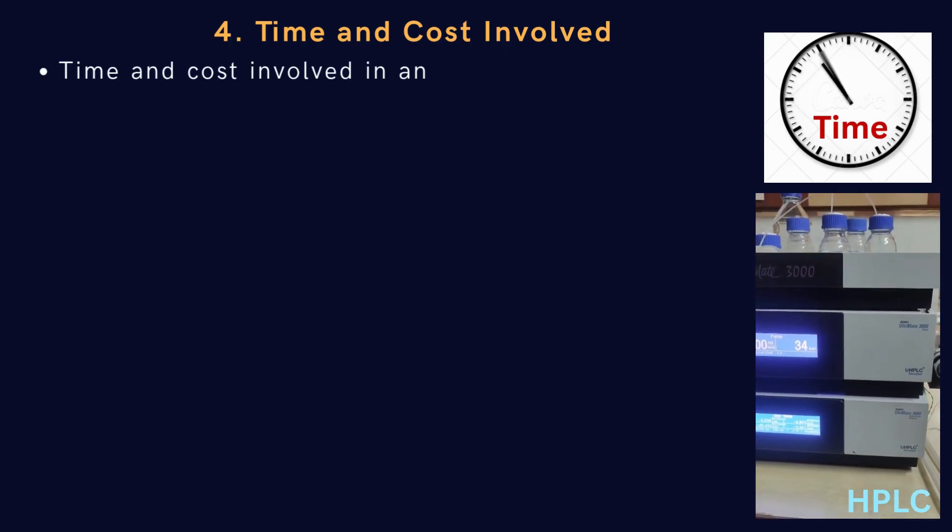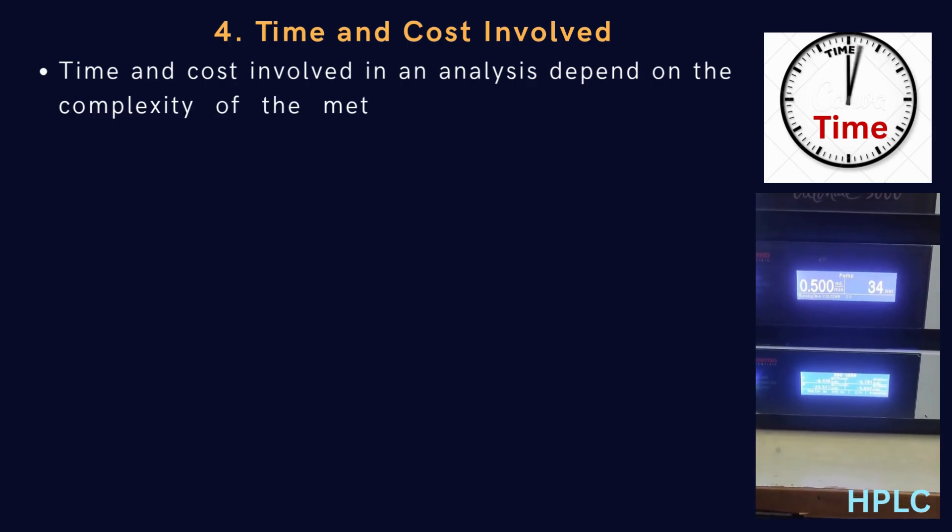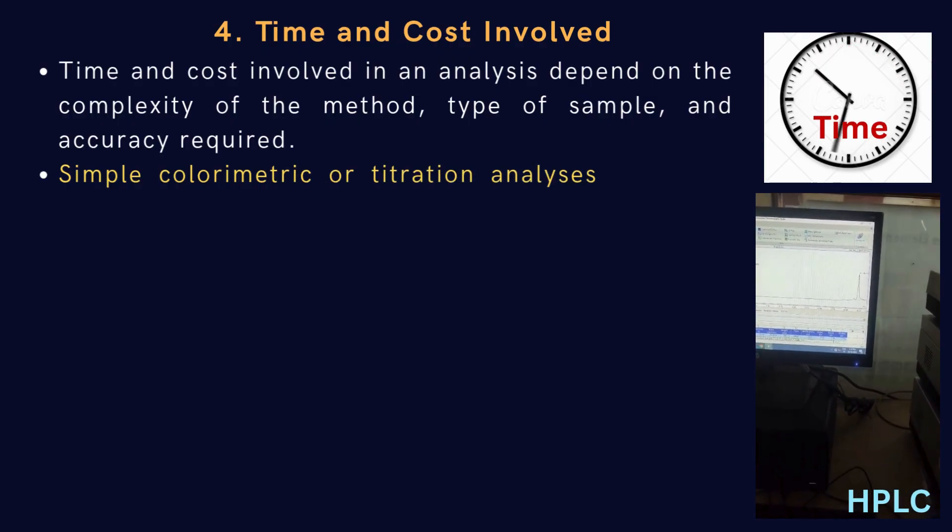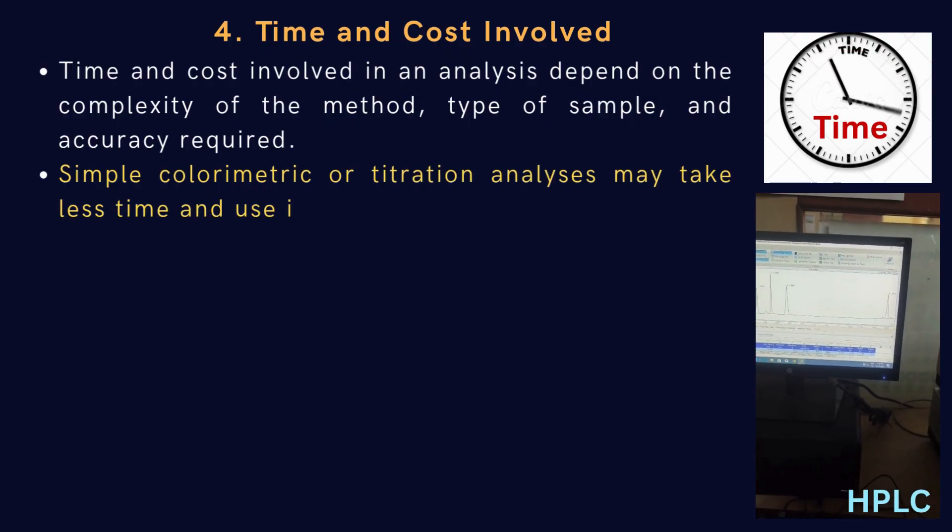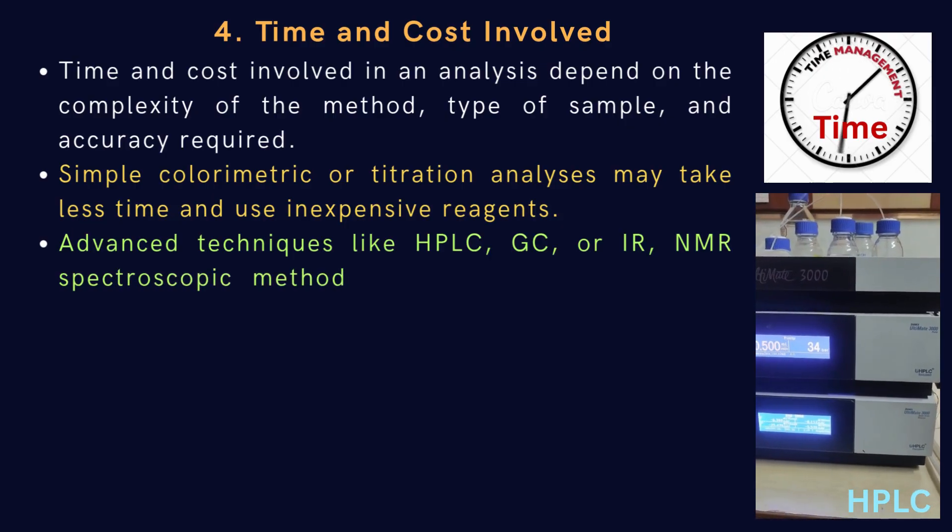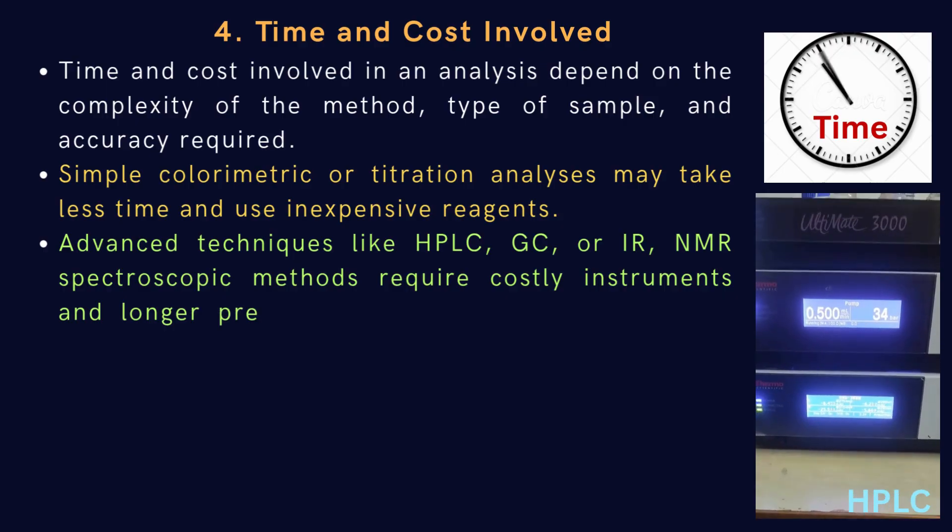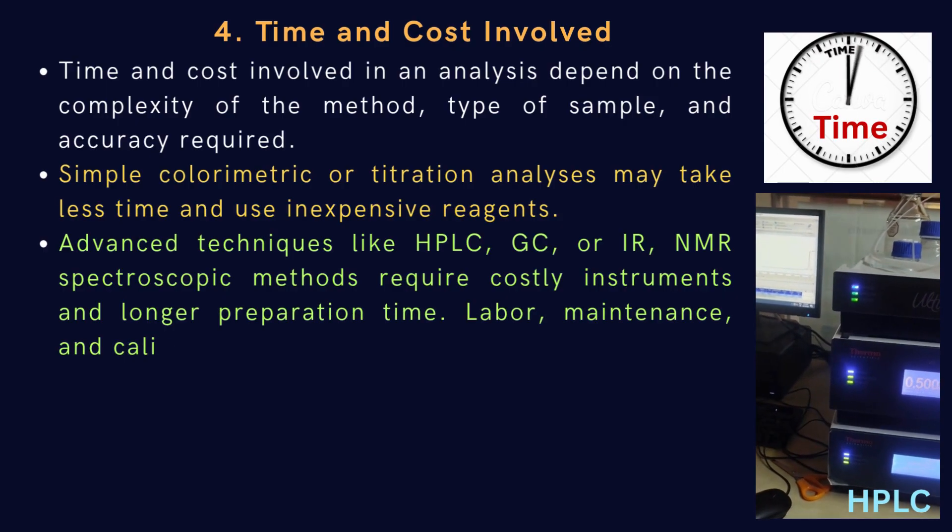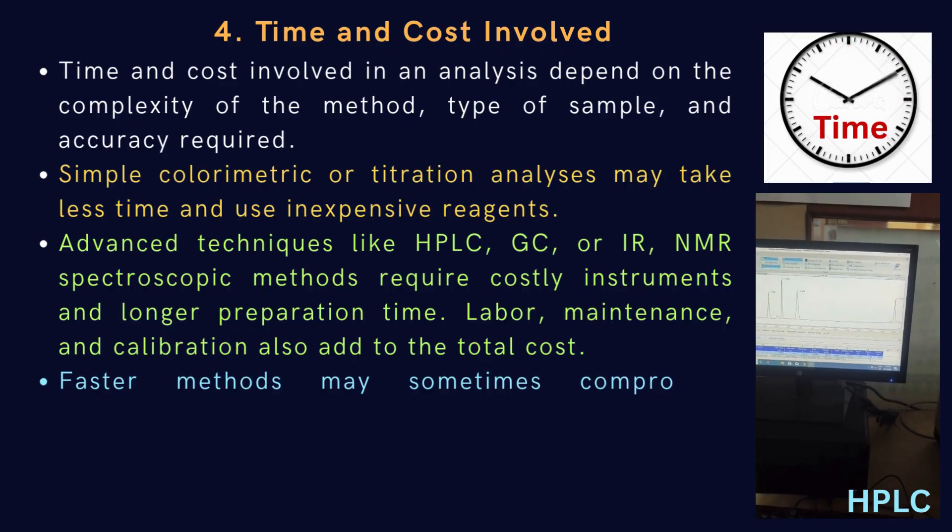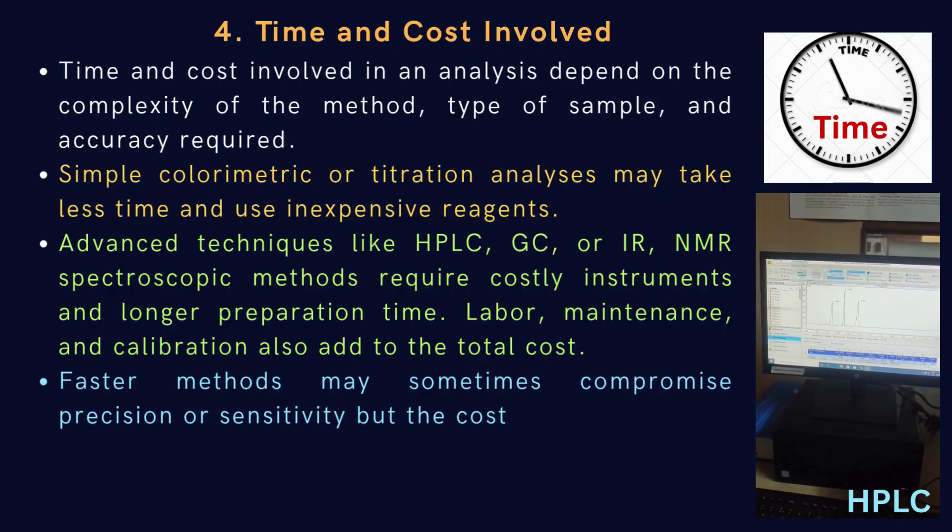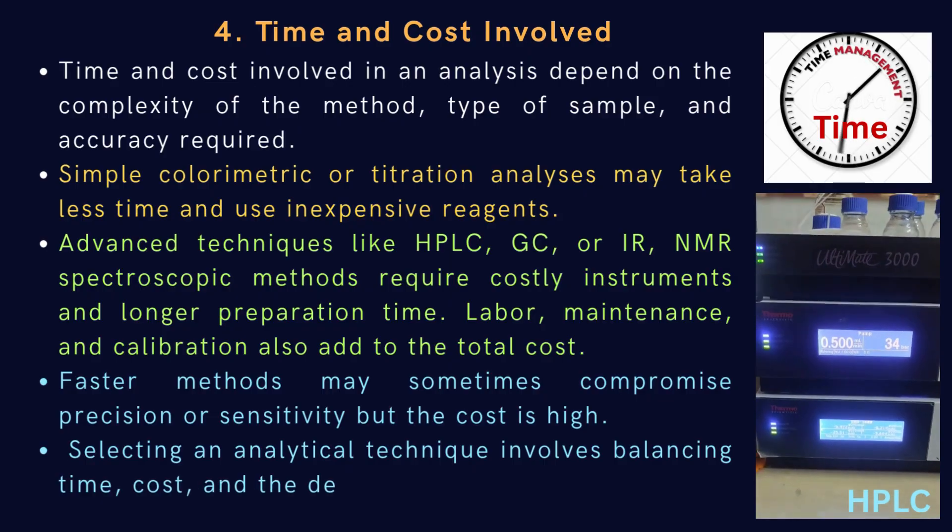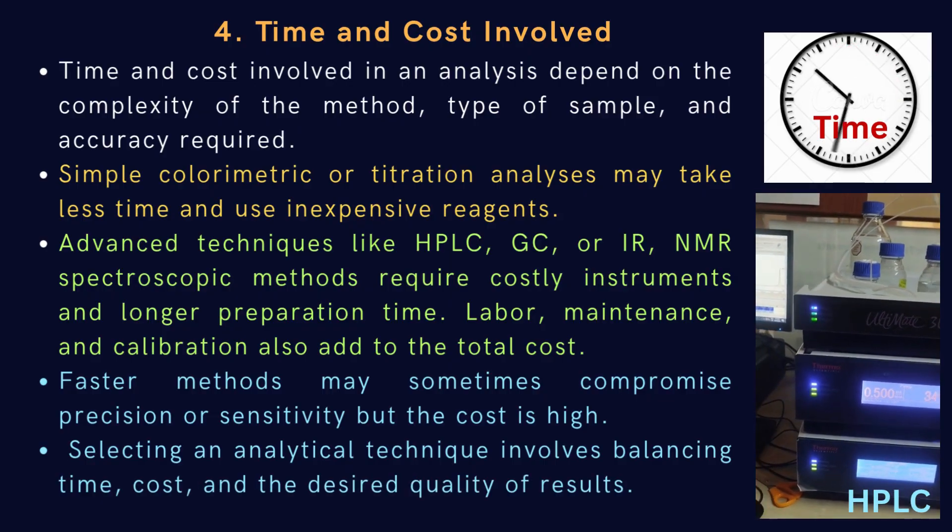Fourth factor that affects the analytical measurement is time and cost. Time and cost involved in an analysis depend on the complexity of the method, type of sample, and accuracy required. Simple colorimetric or volumetric titration analyses may take less time and use inexpensive reagents. Advanced techniques like HPLC, GC, or IR, NMR spectroscopic methods require costly instruments and longer preparation time. Labor, maintenance, and calibration also add to the total cost. Faster methods may sometimes compromise precision or sensitivity but the cost is high. Selecting an analytical technique involves balancing time, cost, and the desired quality of results.